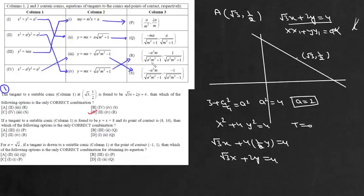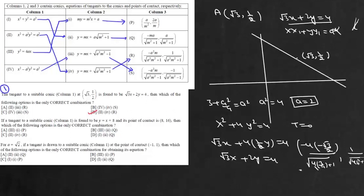Now we verify the point of contact. Using −a²m / √(a²m² + 1), with m = −√3/2 and a² = 4, this gives the point (√3, 1/2), confirming the result. So this first question matches with option D.